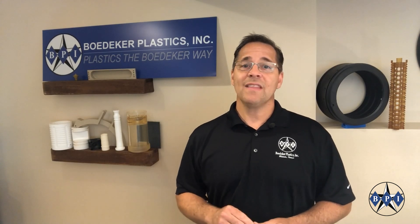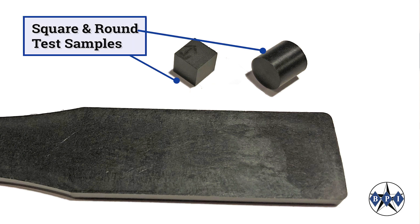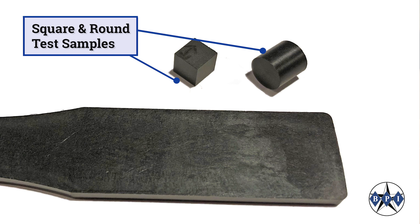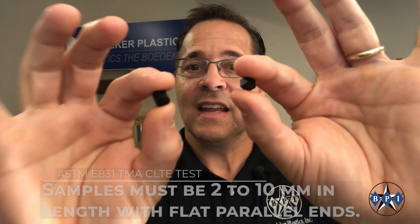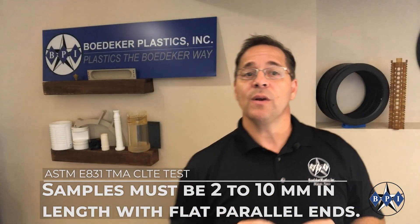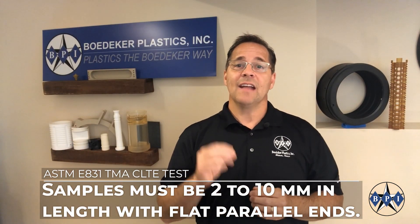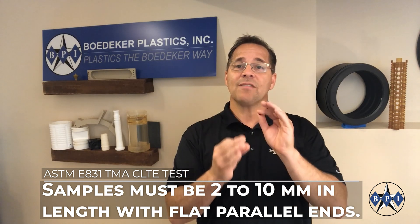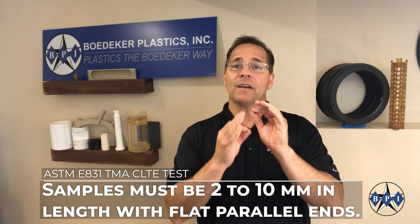The way this test works is a small test sample, like this, is heated on a quartz platform. These test samples can be either square or circular in nature. The length must be between 2 and 10 millimeters, and the samples must have flat parallel ends.